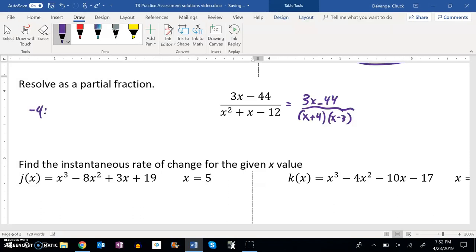So I'm going to use negative 4. And what I plug it into is everything except the part that would make me divide by zero. So 3 times negative 4 minus 44 over negative 4 minus 3.